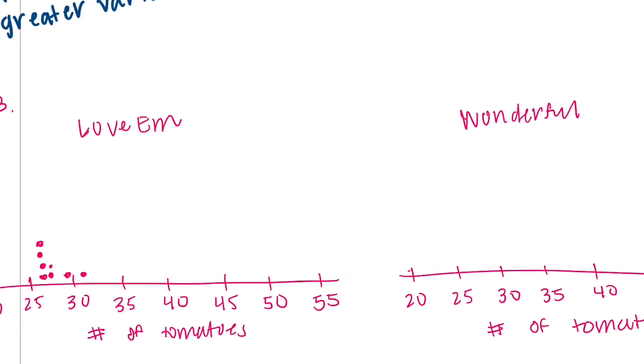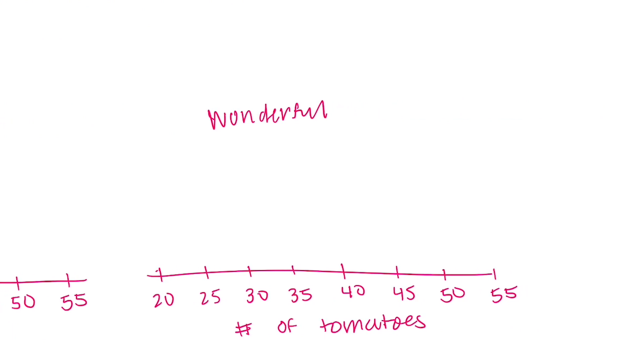And Wonderful, we have 31, 20, 31, 20, 25, 50, 32, another 25, 22, and 51. So there are our dot plots.